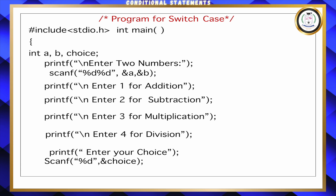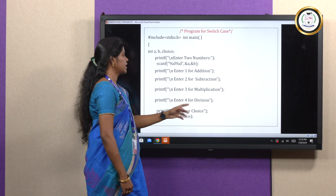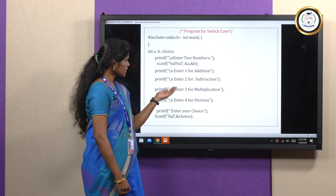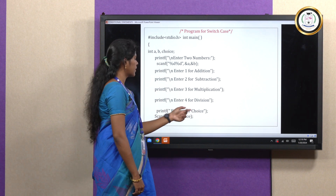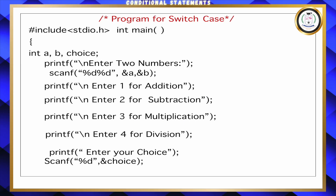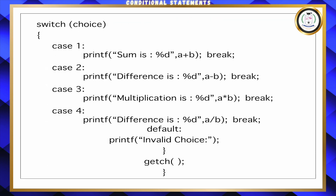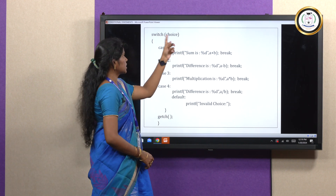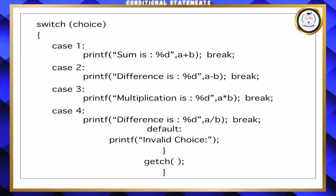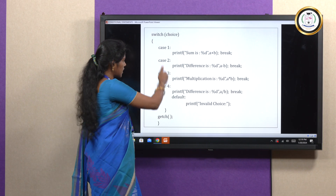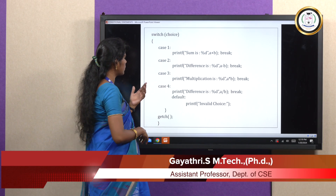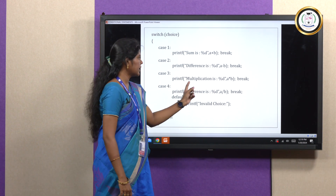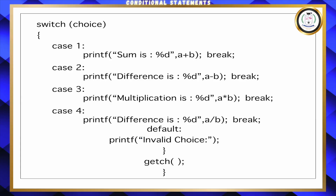In the example, I am getting two numbers from the user. The choices given are: addition, subtraction, multiplication, and division. I am getting the choice from the user. For example, I enter numbers 20 and 10, and give the choice as 3. In the code, switch(choice) is used — 'choice' is the variable obtained from the user. Case 1, case 2, case 3, case 4 correspond to the operations. Choosing case 3 performs multiplication: 20 into 10 equals 200. After the statement executes, the break statement exits the switch.